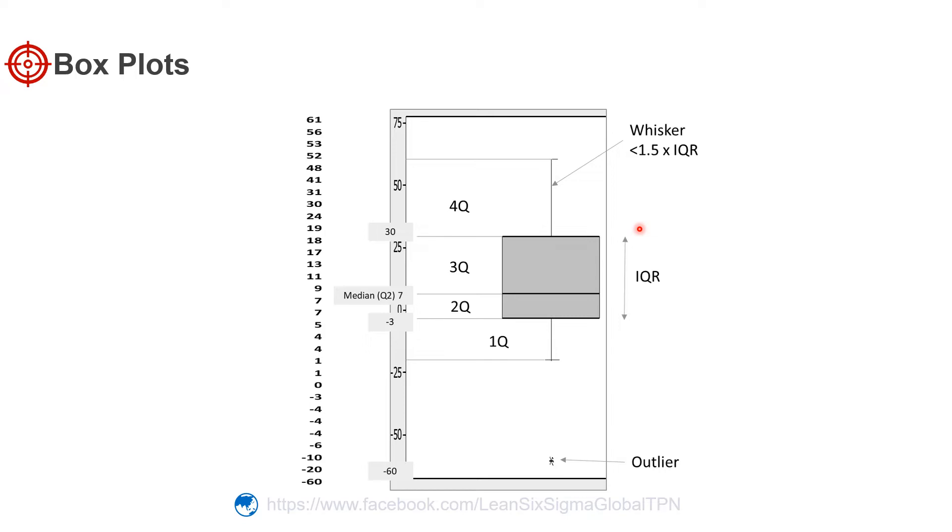The height of the box from Q1 to Q3 is called the interquartile range. We draw lines called whiskers from the top and bottom of the box to show the spread of the remaining data. Whiskers never extend beyond one and a half times the interquartile range.